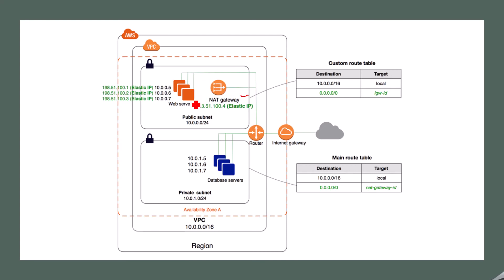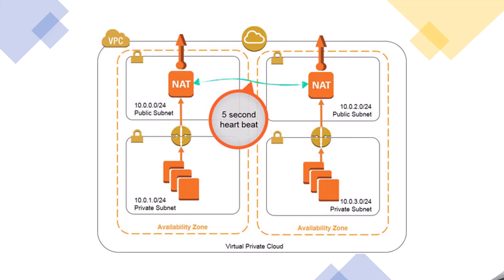The NAT gateway is called from the web server, and the web server is the only point from which the database can be called. There is no possibility that the internet gateway directly calls the database server — the router gets a call from the web server only. The configuration says the target is local, and there is an internet gateway configured. In the private subnet where our database is, we configure a NAT gateway so that it can communicate with the database server. This is the main route table where we have made an entry for the NAT gateway ID.